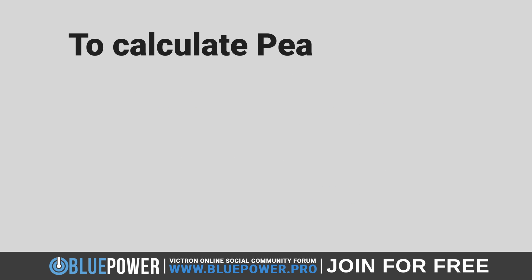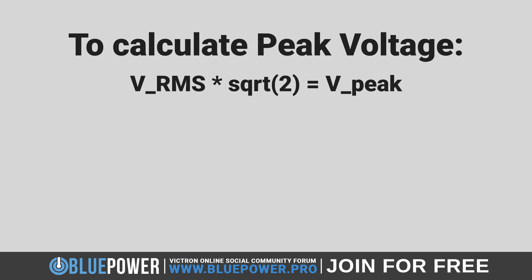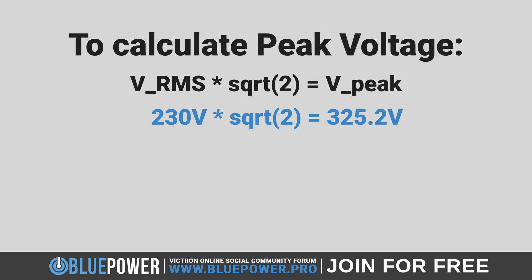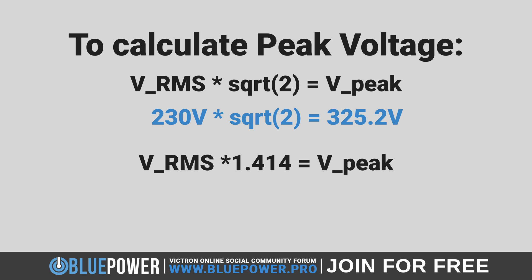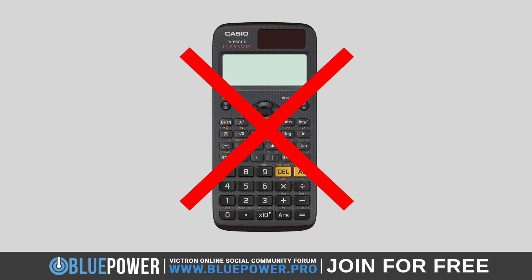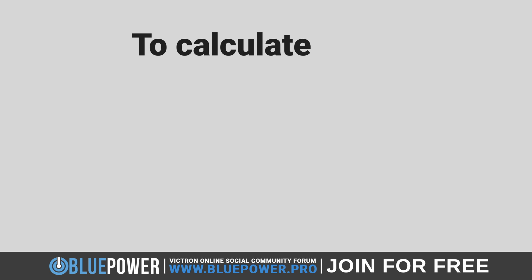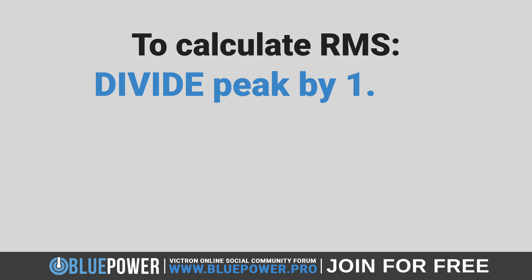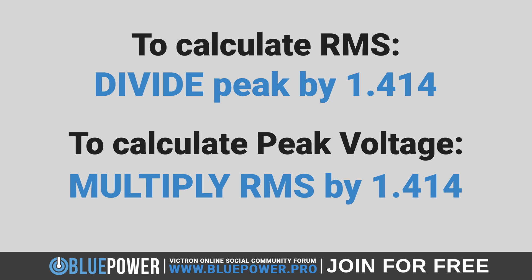This provides a measure of the equivalent DC voltage that would deliver the same power to a load. On the other hand, if you have the RMS voltage and want to calculate the peak voltage, multiply the RMS voltage by the square root of 2. For example, 230 volts multiplied by the square root of 2 equals 325.2 volts. We can simplify this by multiplying by 1.414 — for example, 230 volts multiplied by 1.414 equals 325.2 volts. So just remember: divide by 1.414 to find RMS voltage, and multiply by 1.414 to find peak voltage.